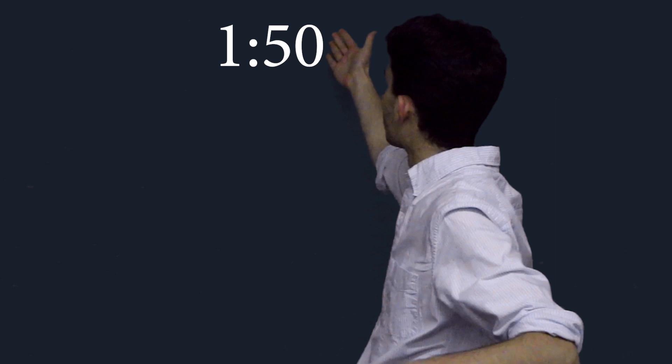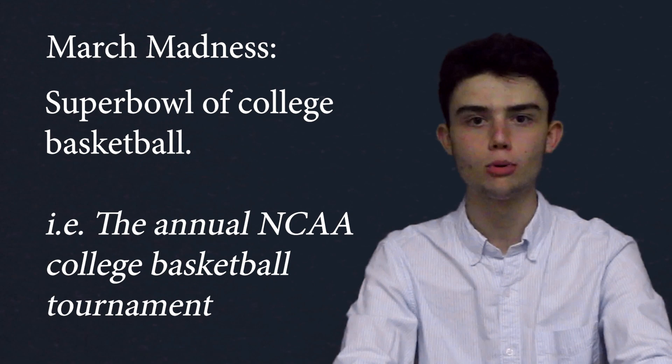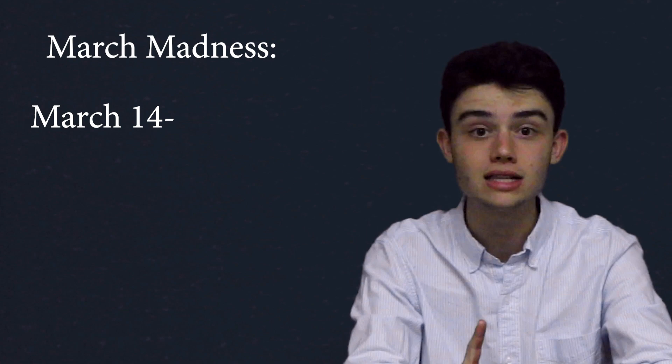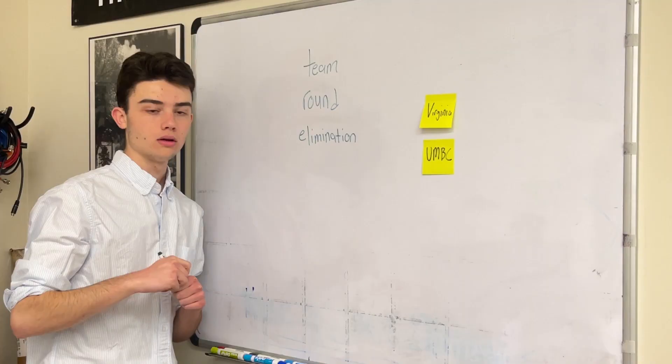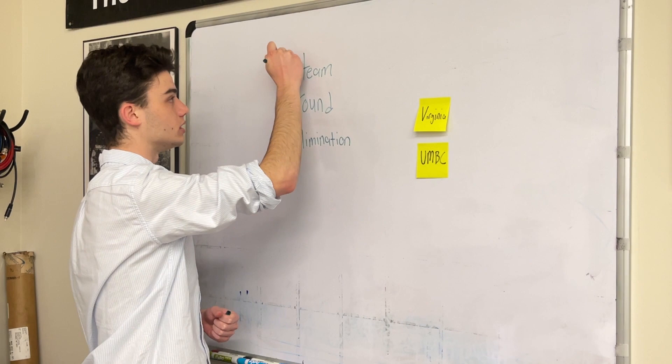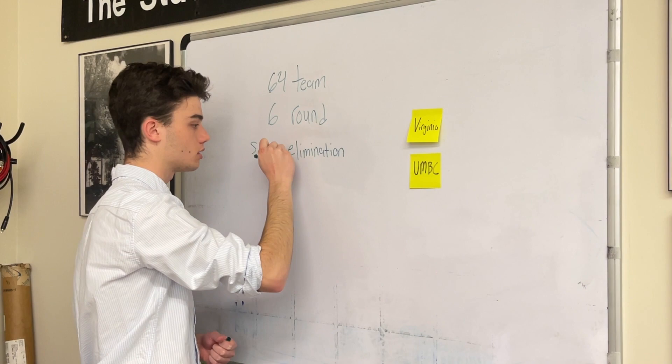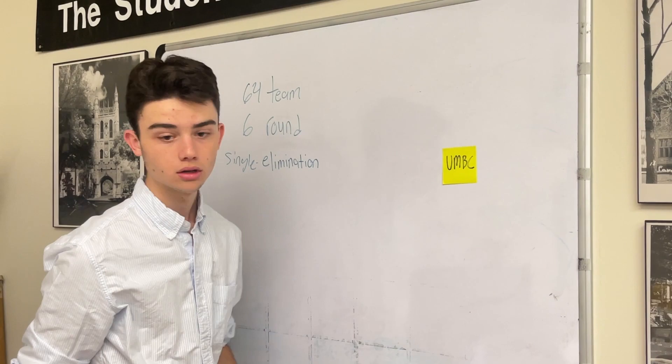For those who are still here: March Madness. It is the Super Bowl of college basketball that spans multiple weeks starting in late March and ends in early April when a champion is crowned. It is a 64-team, six-round, single elimination tournament. If you win, you move on to the next round. If you lose, you're out.